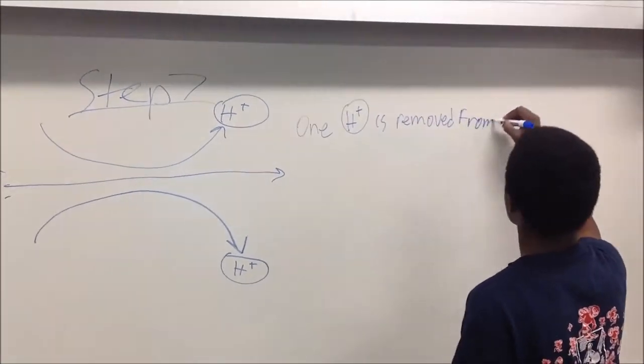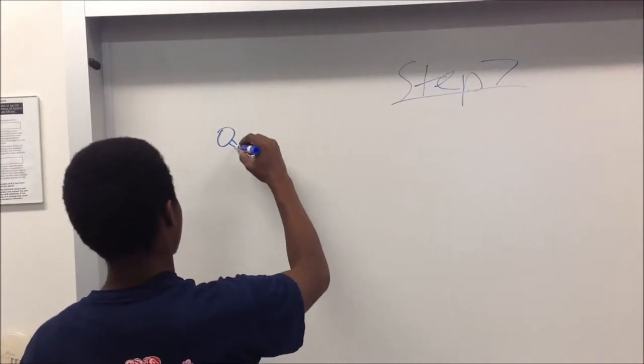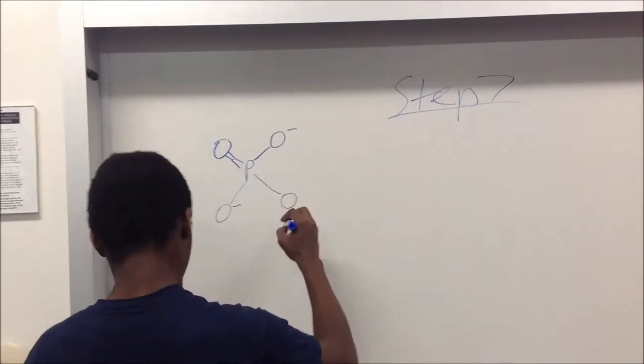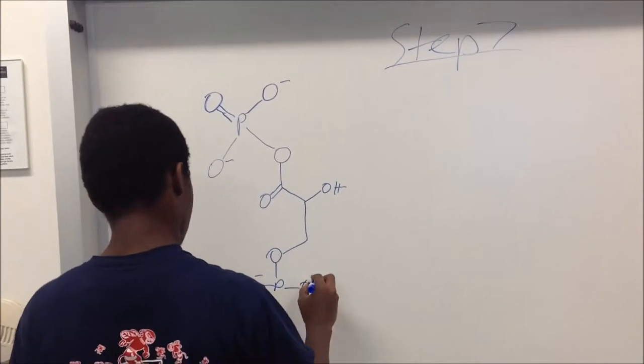We now have two G3P molecules. One H-plus molecule is removed from each for a total of two H-plus molecules. Here is the structural formula of a G3P molecule.